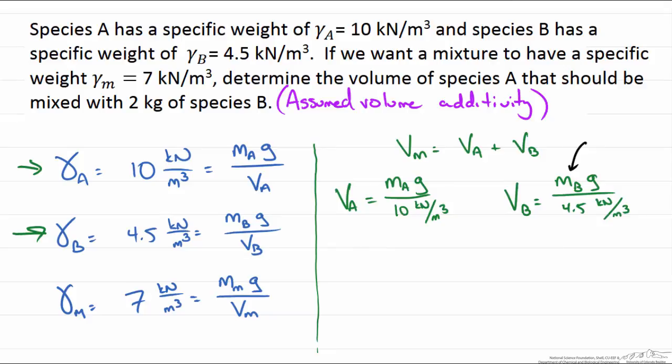If we take these two variables, the volume of A and the volume of B, and plug these back in to our specific weight of our mixture we can write it out using what we said for our mass of our mixture and we will find that there is only one variable to solve for. So let's combine these terms and take a look.